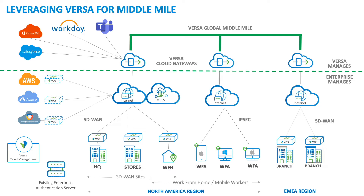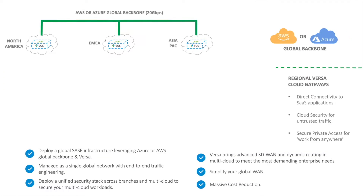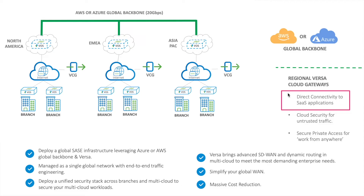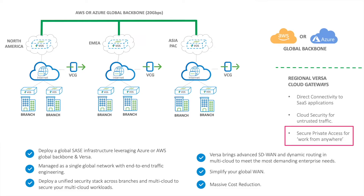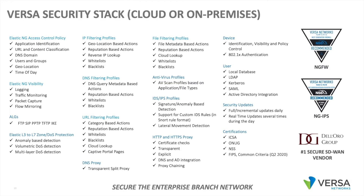Alternatively, you can use the Azure or AWS global backbone as your middle mile by placing Versa nodes in each region and leveraging the AWS or Azure global backbone as other middle mile options. We may still want to leverage Versa Cloud Gateways for direct connectivity to applications, cloud security for untrusted traffic, and secure private access for work from anywhere. Versa also gives you SASE deployment options: all on-premise, thin branch with heavy cloud, or thick branch with thin cloud — whichever you prefer.